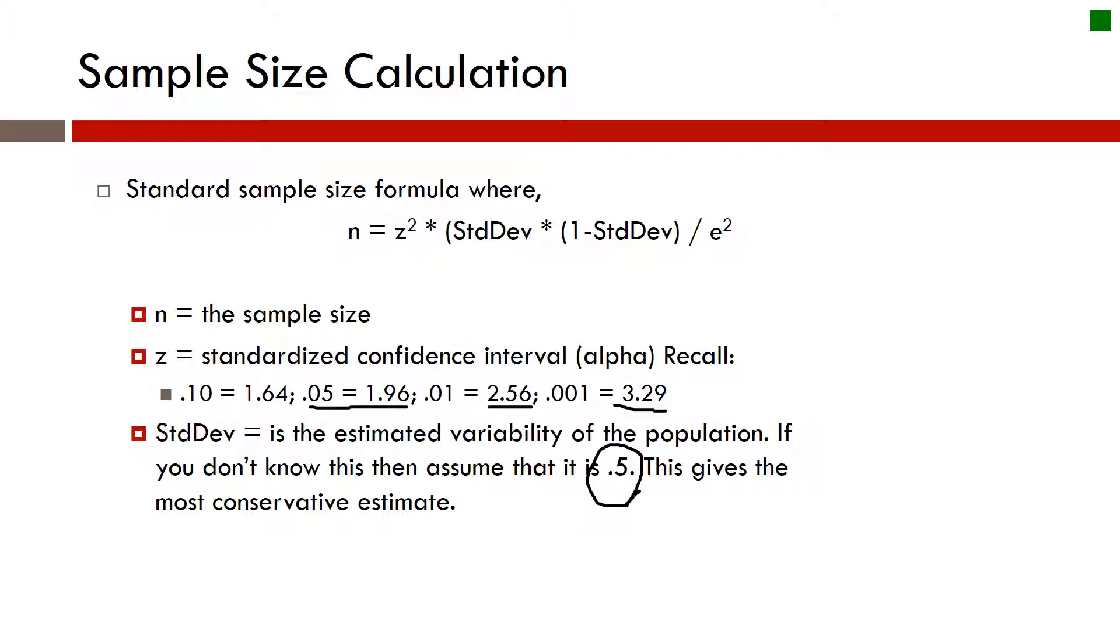Use 0.5. This will give you the most conservative estimate. It'll give you the largest sample that you should have. And as a general rule, honestly, if you want to just put 0.5 in no matter what, then that won't be bad.